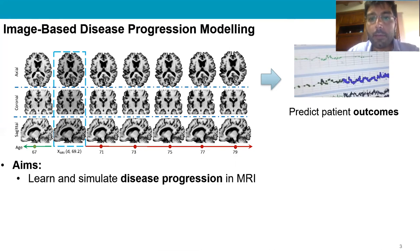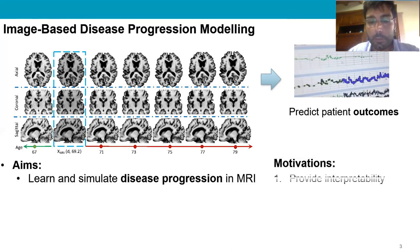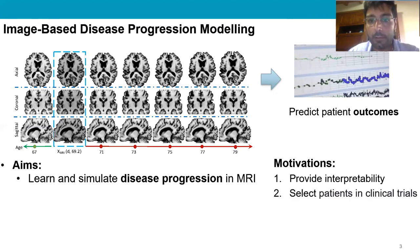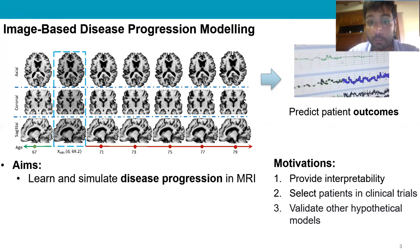This has the advantage of providing a transparent result to the clinician, who would be able to verify the reason for the obtained prediction. Most importantly, such a system can be useful to help the selection of subjects involved in clinical trials, or to validate hypothetical models that describe poorly understood diseases like Alzheimer's.